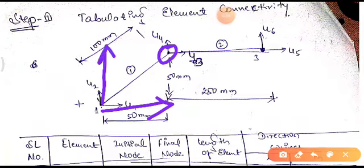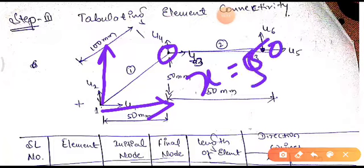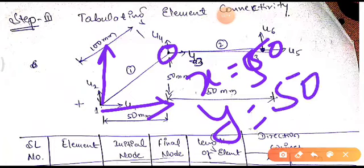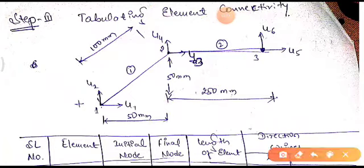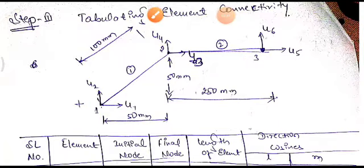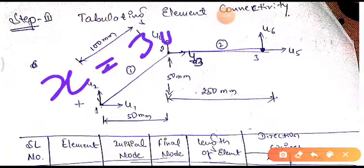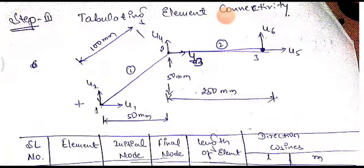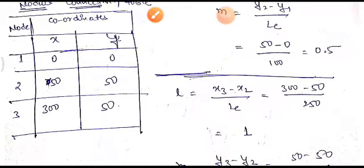For node 2, x = 50 and y = 50. For node 3, it is at a distance of 300 mm from the reference point along x and 50 mm along y, so x = 300 and y = 50. These values are all tabulated in the nodal connectivity table.